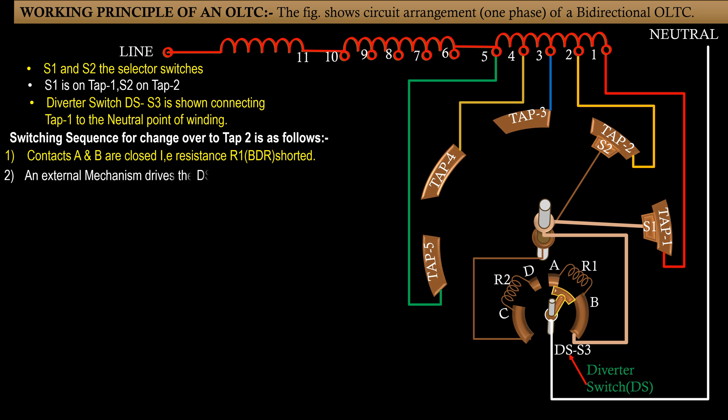Step 2: An external mechanism drives the DSH3. Contact B gets open. The load current now flows from tap 1 through R1 and contact A.